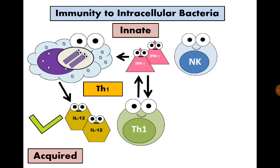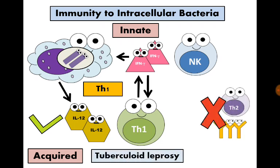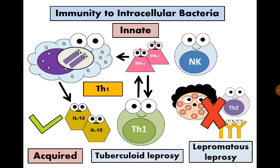This T-helper-1 response is protective — it helps kill the bacteria and controls the disease. However, if T-helper-2 response develops instead of T-helper-1, this response will be harmful and counter-protective. T-helper-2 cells will stimulate antibody production that are useless and don't have any effect against intracellular bacteria. An example is leprosy, caused by Mycobacterium leprae. If T-helper-1 response develops, it controls the disease resulting in healing — this is called tuberculoid leprosy. However, if T-helper-2 response develops, the disease progresses into diffuse nodules, forming the severe form called lepromatous leprosy.